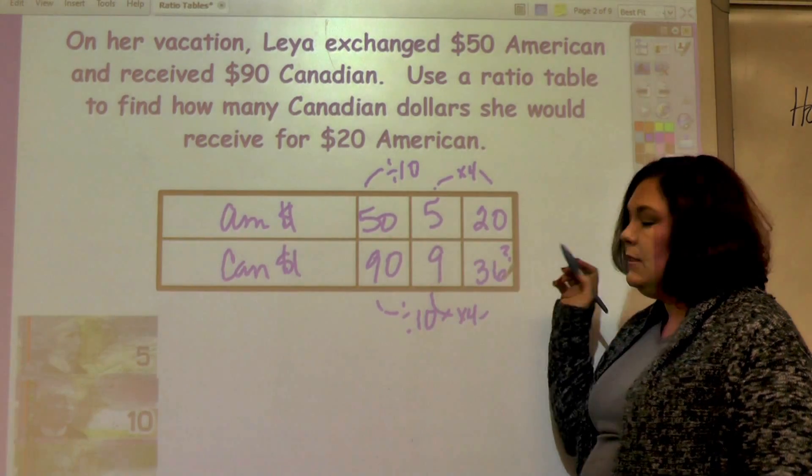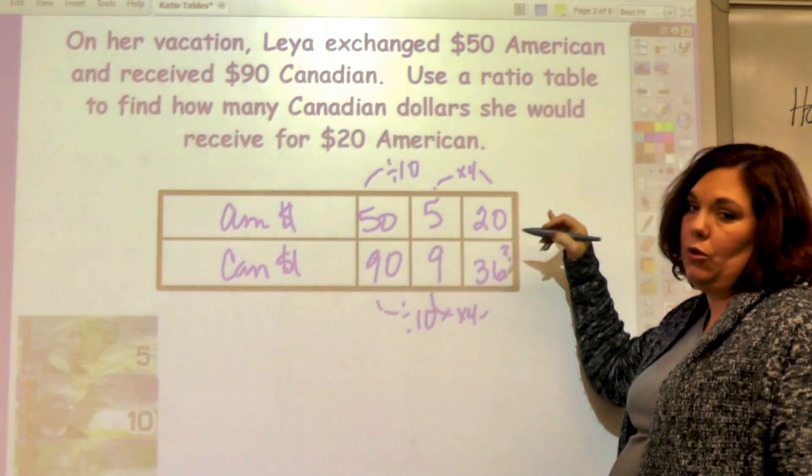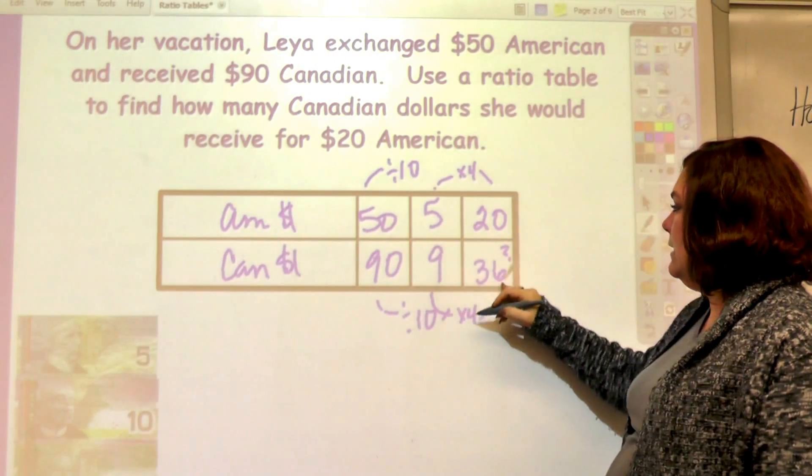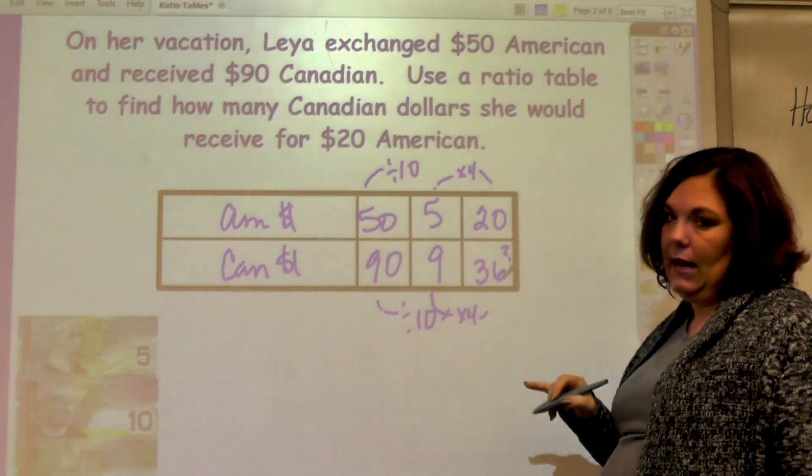My answer is I can get 36 Canadian dollars for 20 American dollars, and that makes sense because this is less than half and this is less than half.